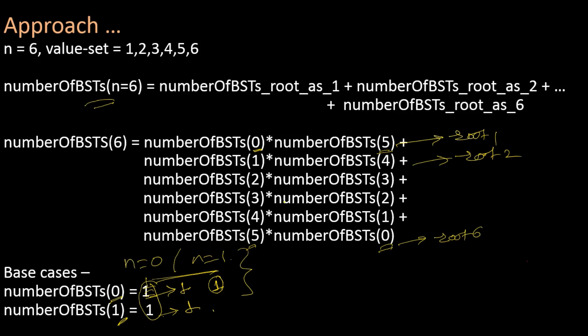Notice that in this computation there is a lot of redundancy. For each value of n, we are computing it twice — for example, f(0) is computed twice, and f(5) is computed twice. We can avoid this redundancy by storing the intermediate results in an array.